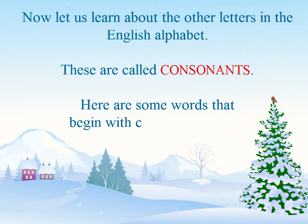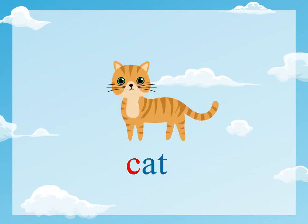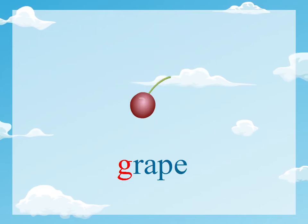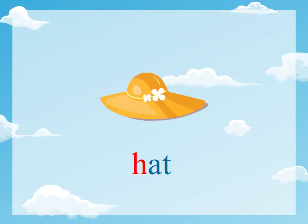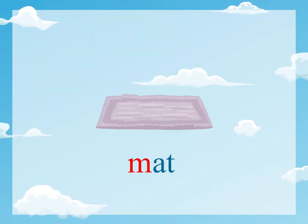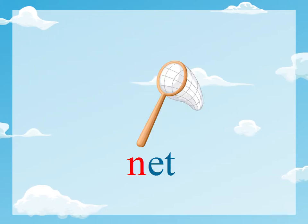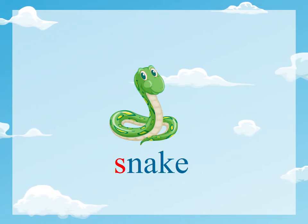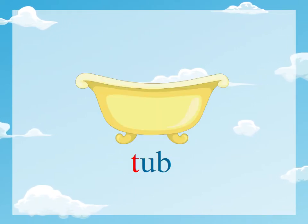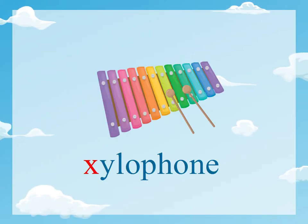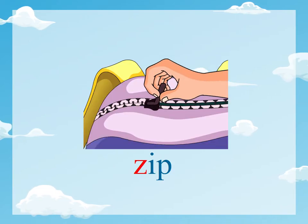Here are some words that begin with consonant sounds. Boy, cat, dog, fan, grape, hat, jacket, kite, lamp, mat, net, pot, quilt, rat, snake, tub, violin, watch, xylophone, yak, zip.